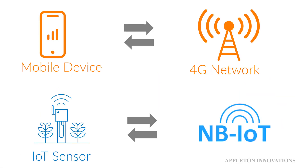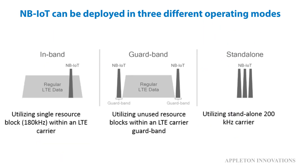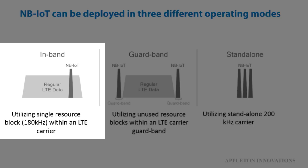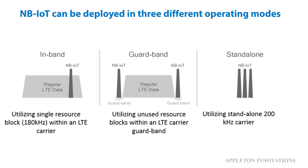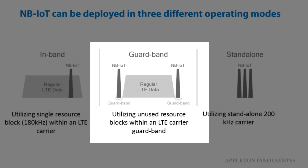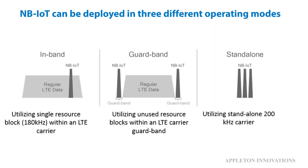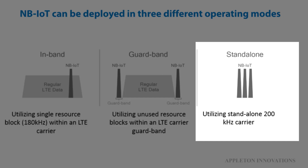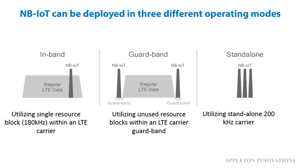IoT devices connect to the NB-IoT network the same way mobile devices connect to 3G, LTE, or 4G networks. NB-IoT can be deployed in three operating modes: in-band mode, guard band mode, and standalone mode. In-band mode uses a resource block within the LTE frequency band. Guard band mode uses a free resource block within the LTE guard band — a thin band of spectrum used to prevent interference. Standalone mode uses GSM frequencies in a bandwidth of 200 kilohertz.